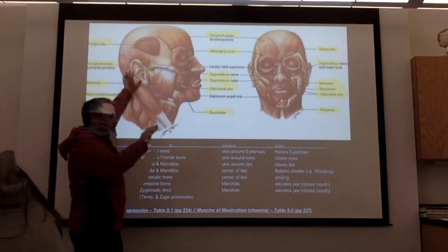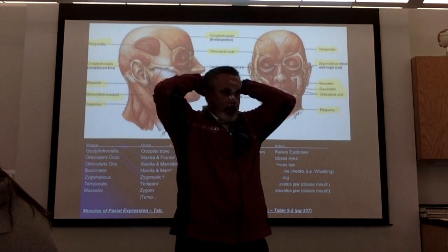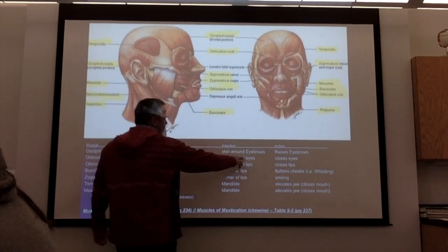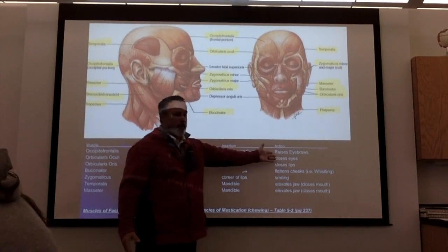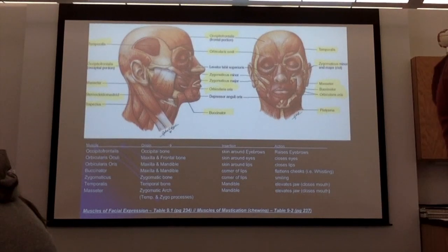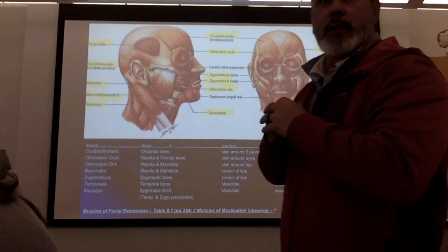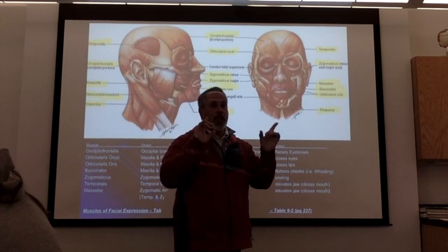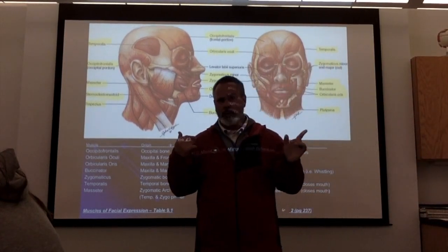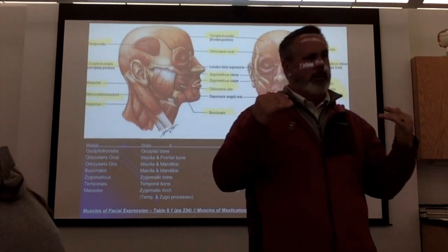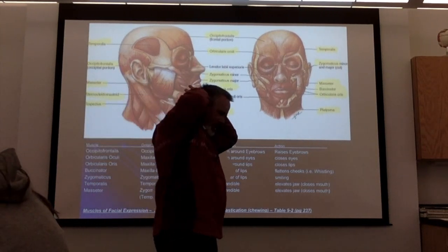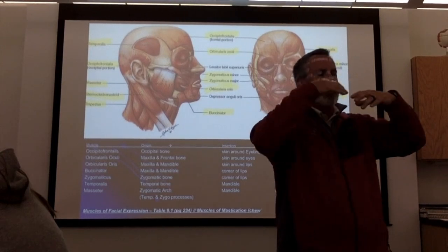This is the muscle. It extends from the occipital bone, coverage goes across your scalp to the frontal bone, and it inserts in the skin around the eyebrows. If it's anchored in the occipital bone and it's pulling on the skin around your eyebrows, what are you doing when you're using the occipital frontalis? Raising your eyebrows. Some people can do it independently, some can't. I can only do one side.